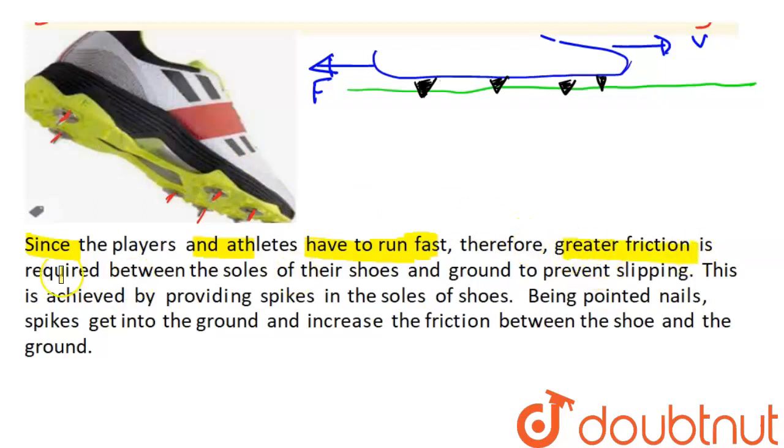Therefore, greater friction is required between the soles of the shoes and the ground to prevent slipping. This is achieved by providing spikes on the soles of the shoes. Being pointed, spikes get into the ground and increase the friction between the sole and the ground.